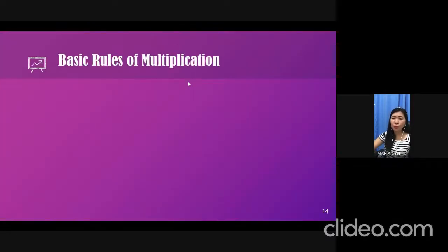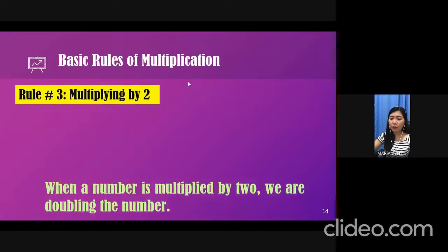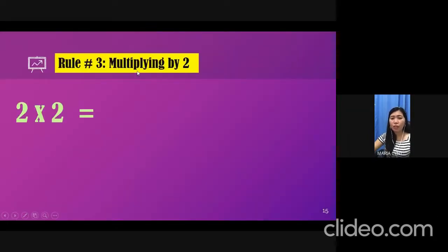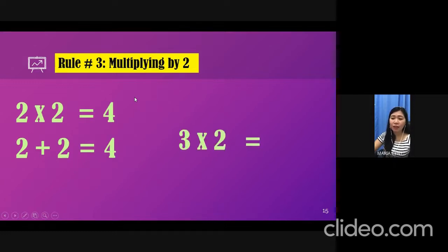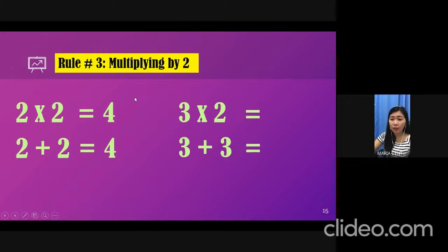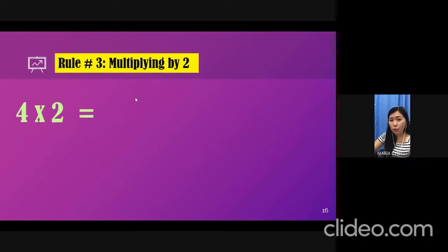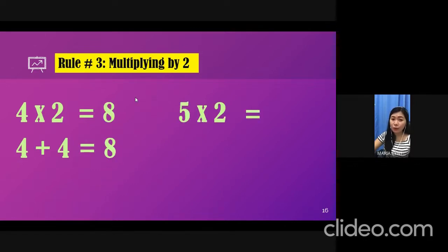Let's proceed to rule number 3, which is on multiplying by 2. This rule says that when a number is multiplied by 2, we are doubling the number. For example, 2 times 2 is the same thing as 2 plus 2. The answer is of course 4. 3 times 2 is the same thing as 3 plus 3, and the answer of course is 6. Third example, 4 times 2, what do you think? Yes, you're right. It's the same thing as 4 plus 4. So, our answer is 8. Last example, 5 times 2 is the same thing as 5 plus 5, and the answer is 10.